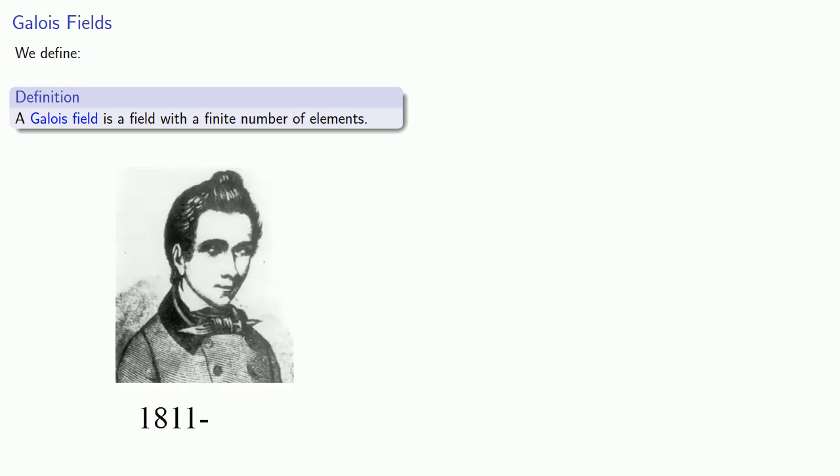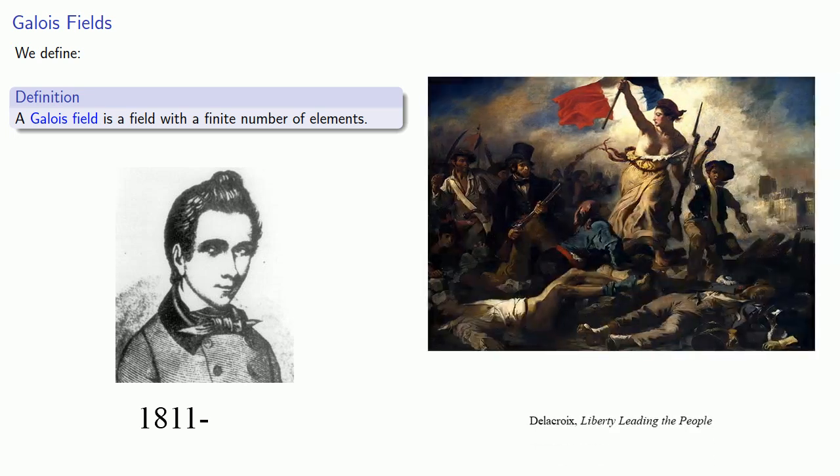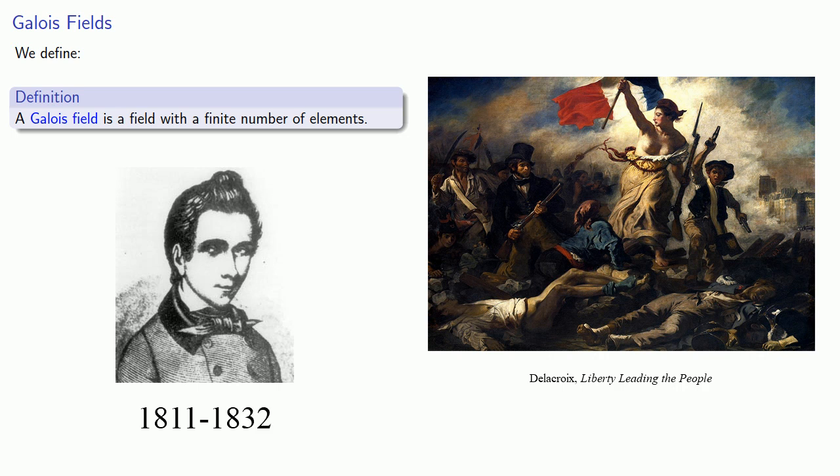So we'll introduce one term. A Galois field is a field with a finite number of elements. Galois was a 19th century French mathematician who got himself involved in one of the revolutions at the time, wrote up a bunch of papers on what is now called group theory, and managed to get himself killed in a duel at the age of 20.